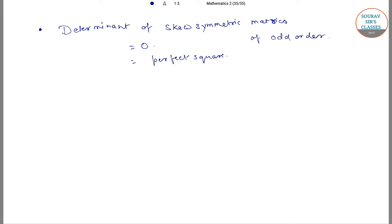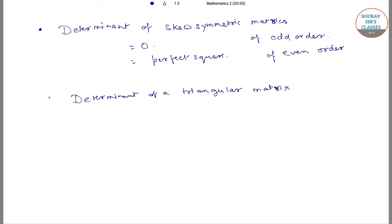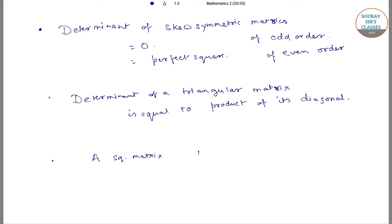The determinant of a skew-symmetric matrix is a perfect square if the order of that skew-symmetric matrix is even — that is, for an even-ordered skew-symmetric matrix. Just like a diagonal matrix, the determinant of a triangular matrix is also equal to the product of its diagonal elements.